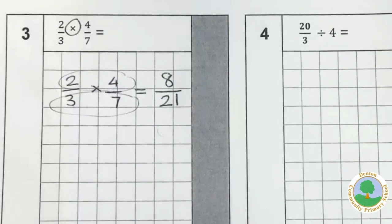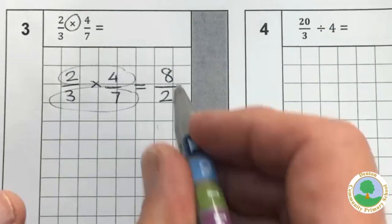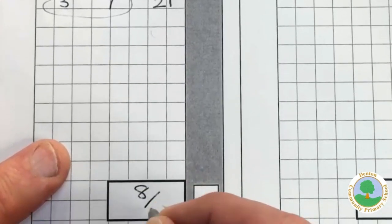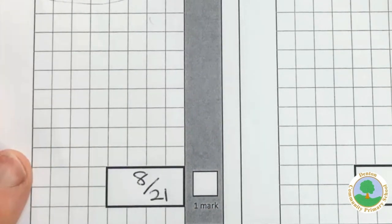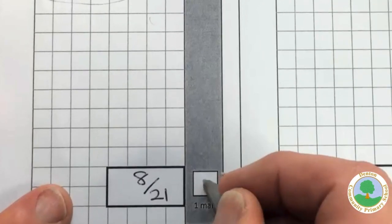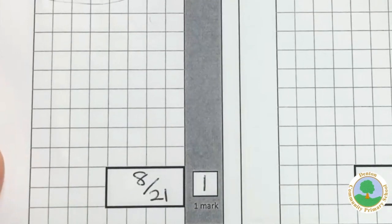And it really is as simple as that. Again, remember what we said about simplifying? If you can and you're certain, go for it. But actually, the safe thing to do is just to write the answer. Eight twenty-oneths or eight over twenty-one. That's as simple mark as we'll get.